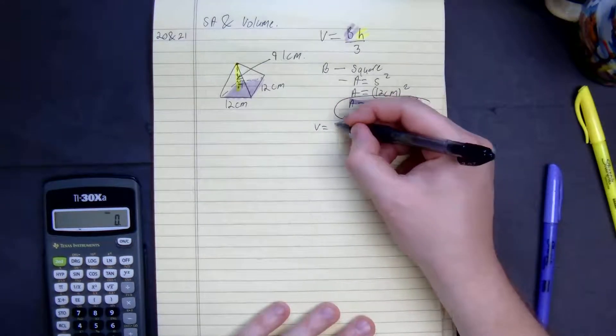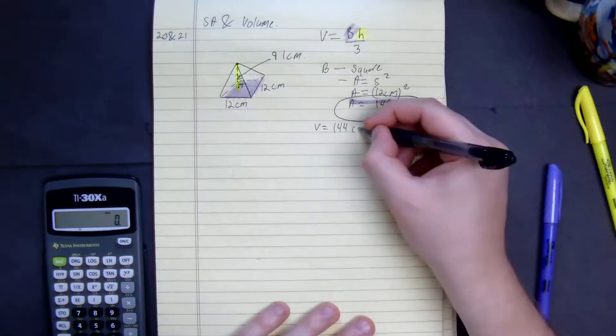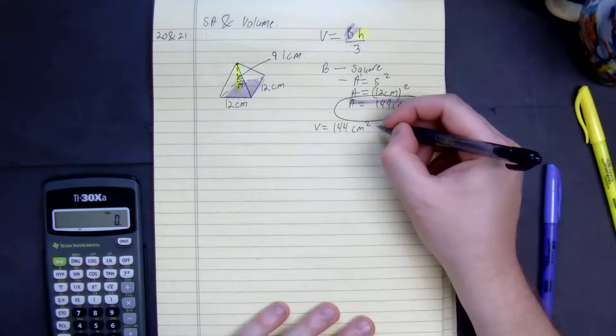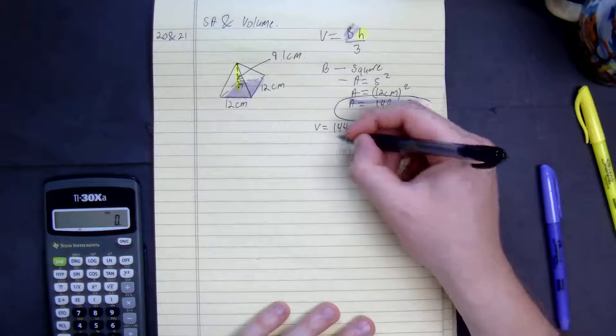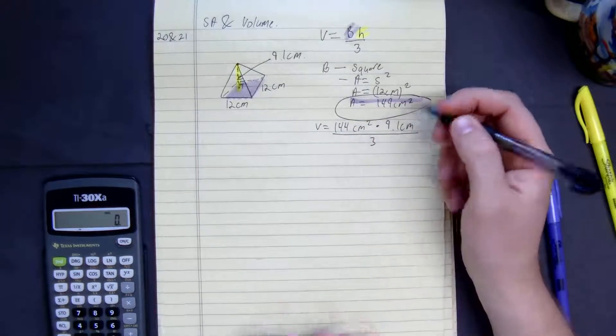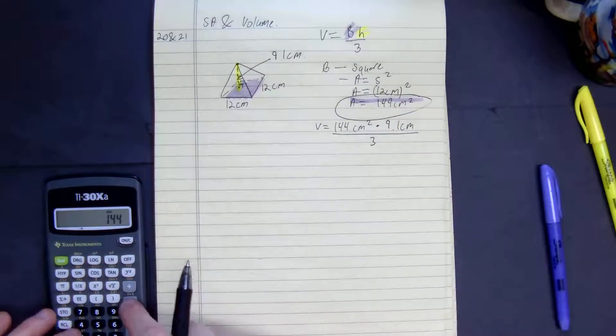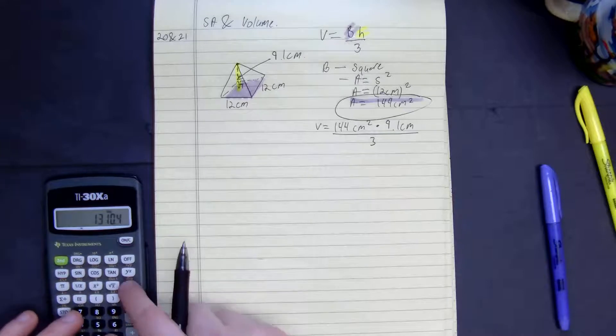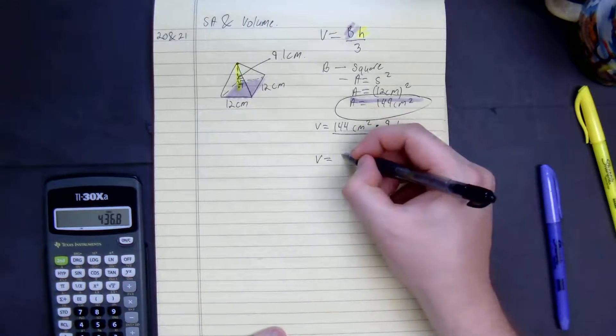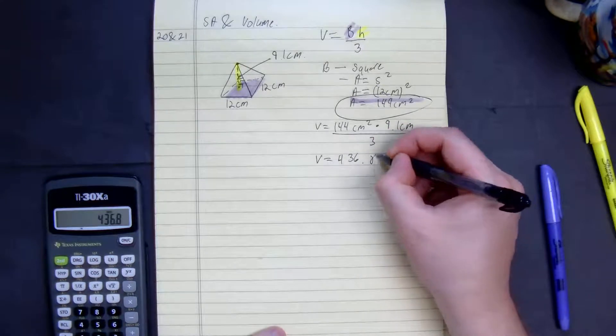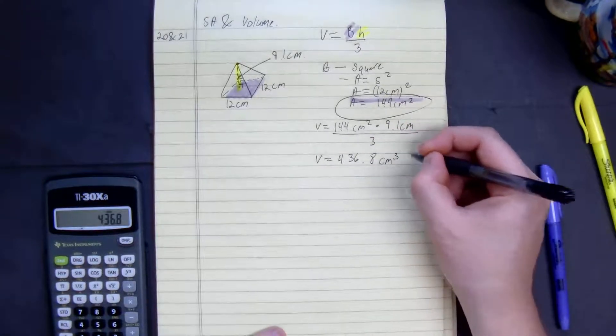V is equal to 144 centimeters squared times 9.1 centimeters all divided by 3.